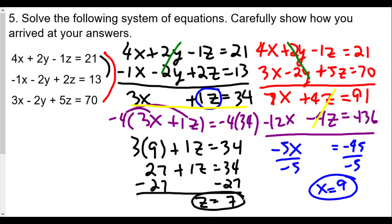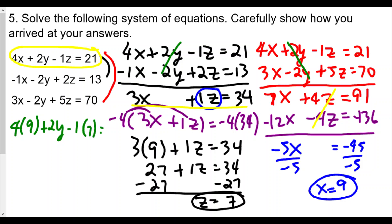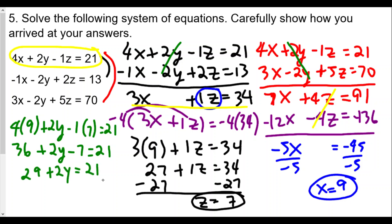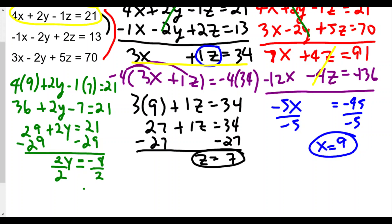Now we have x equals 9 and z equals 7. To solve for y, plug into one of the original equations — we'll use the first one: 4 times 9 plus 2y minus 1 times 7 equals 21. That gives 36 plus 2y minus 7 equals 21, so 29 plus 2y equals 21. Subtracting 29: 2y equals negative 8. Dividing by 2: y equals negative 4.